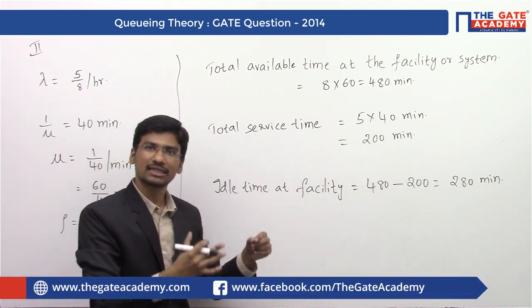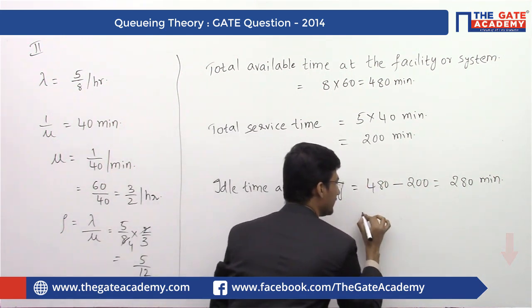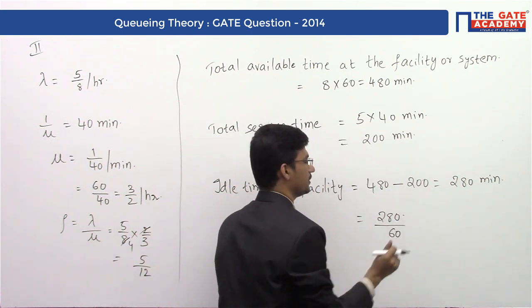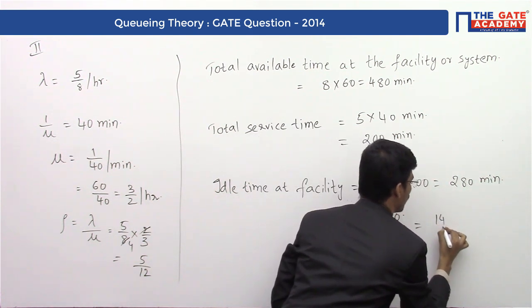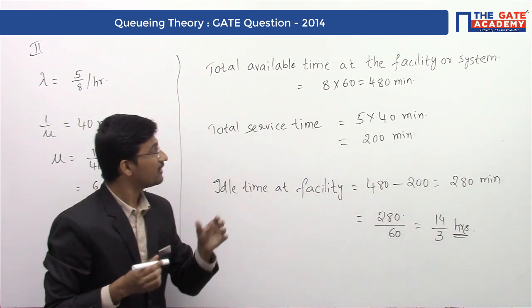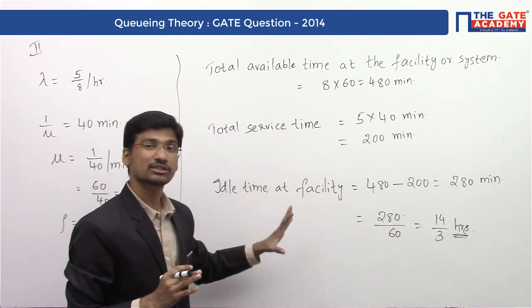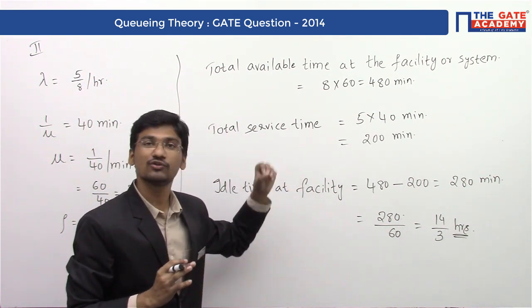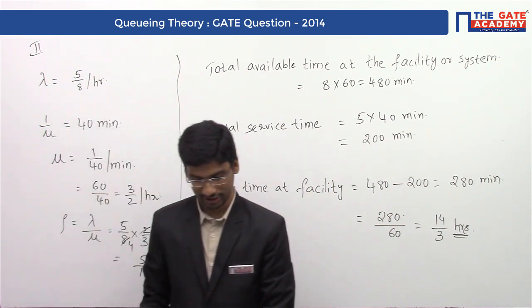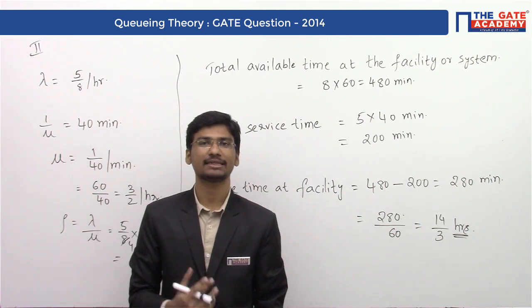The options are given in terms of hours, so we convert 280 minutes into hours by dividing by 60. This gives us 14/3 hours. Even if you don't know any formulas about Queuing Theory, you can solve this question just by using common sense. The correct answer for this question is option B, which is 14/3 hours.